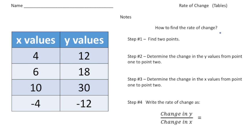A table shows pairs of x and y values, which can be graphed. These x and y values, when placed together, are linear — so they make a straight line.